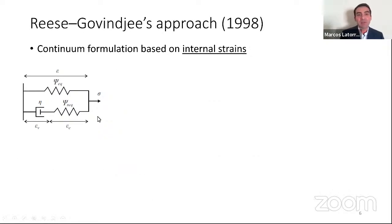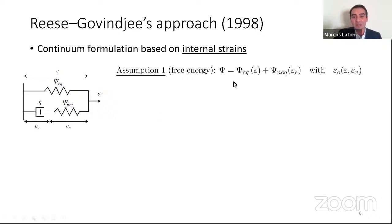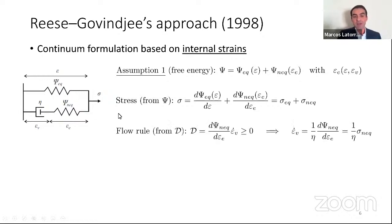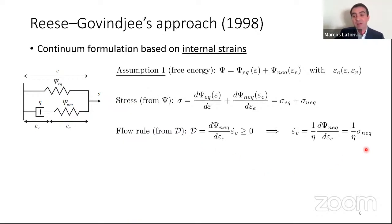Eleven years later, Crisfield and Govindjee proposed another model — and here I must say that Govindjee was a student of Simó — based on internal strains. The energy is expressed in terms of the strains of the springs, both total strain and elastic strain. With that, one can again determine the stress, which is now the sum of both branches. Another difference comes from the dissipation equation: it automatically defines an evolution equation for the viscous strain, which can also be considered as a constitutive equation of Newton type for viscosity, because the stress is proportional to the rate of change of deformation.